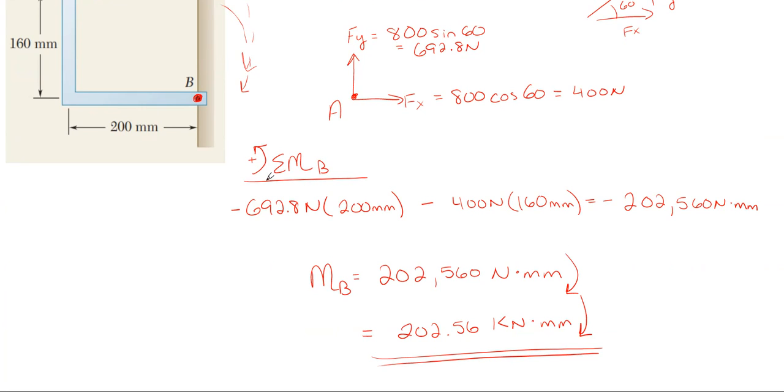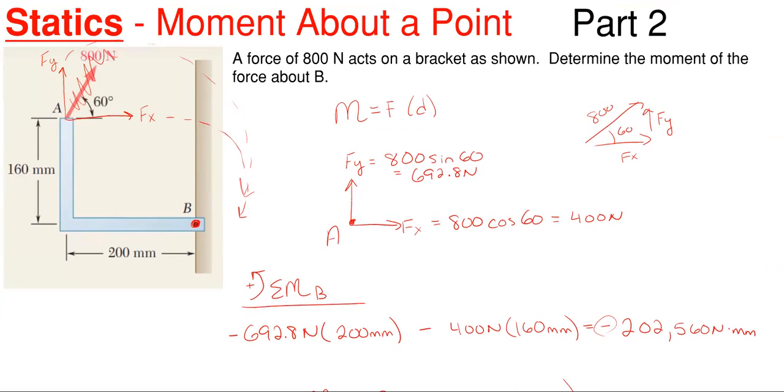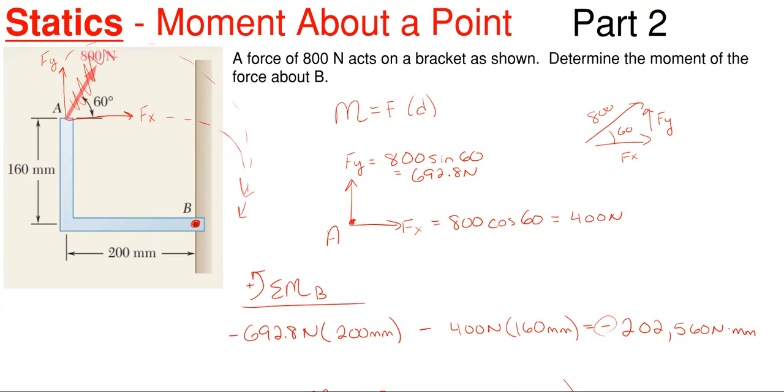And that's how you would solve that particular problem. Just keep in mind, based upon your rotation arrow, what you took as positive. If it came out minus, that means it's going in the opposite direction. So drop the minus sign and flip the arrow direction. And that's how you would solve that particular problem, how to find the moment about point B.